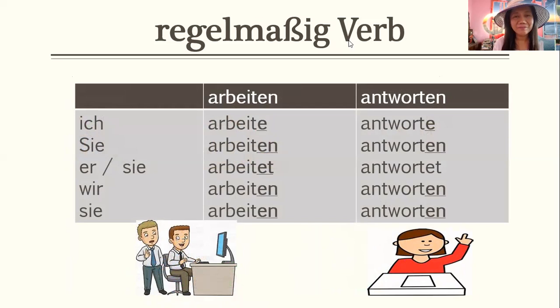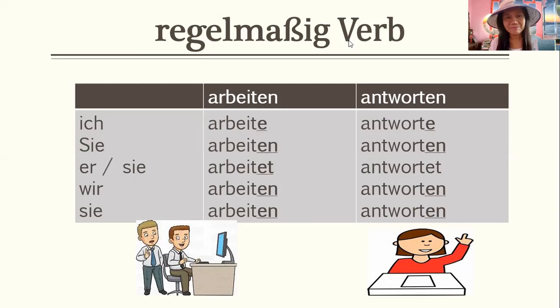What about verbs where the stem ends in -t? You cannot follow the first rule in conjugation. For example, arbeiten — if you use the stem ending in -t, then with er it would become arbeite, which is incorrect. So: ich arbeite, Sie arbeiten, er arbeitet, sie arbeitet — you add -et. Then antworten means 'to answer': ich antworte, Sie antworten, er antwortet, sie antwortet, wir antworten, sie antworten.